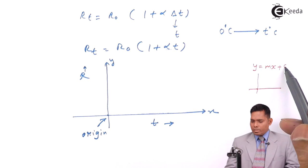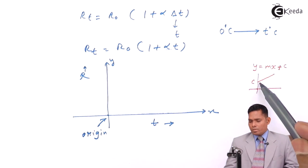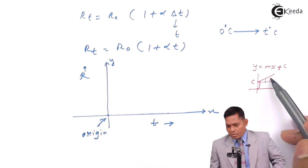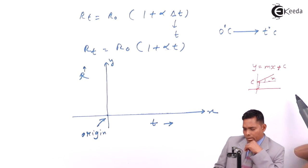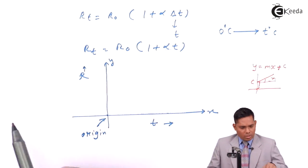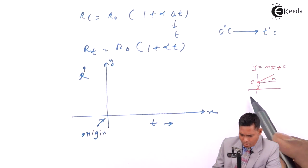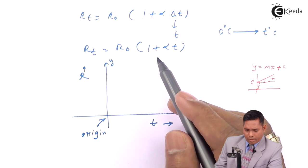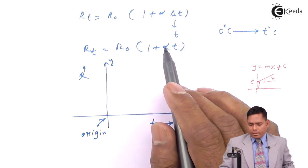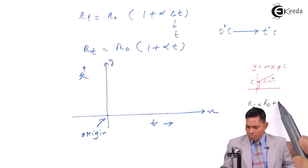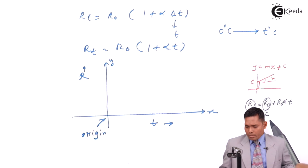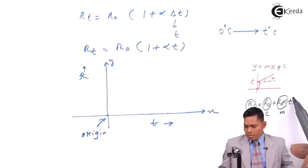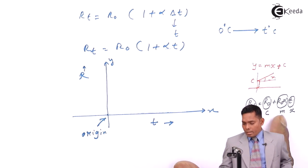In the standard equation y = mx + c, c is the y-intercept and m (tan theta) is the slope. Comparing with Rt = R0 + R0·alpha·T: Rt corresponds to y, R0 corresponds to c (the y-intercept), R0·alpha corresponds to m (the slope), and T corresponds to x. So this is in y = mx + c form, where temperature varies along the x-axis and resistance varies along the y-axis. The y-intercept here is R0.